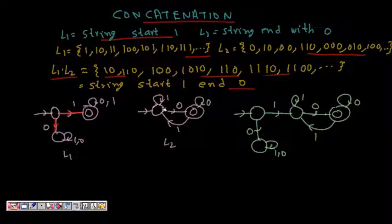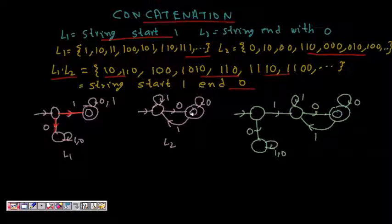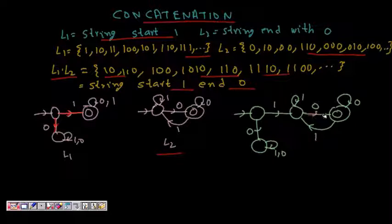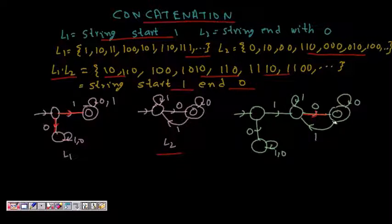Building the automaton for L1 dot L2: it starts with 1 (if a 0 comes first, go to dead state). Once we have a leading 1, any 0 or 1 is fine, but the string must end with 0. Getting a 0 moves to the accept state; getting a 1 from the accept state returns to the waiting-for-zero state. If a 0 appears at the very start the string is rejected.